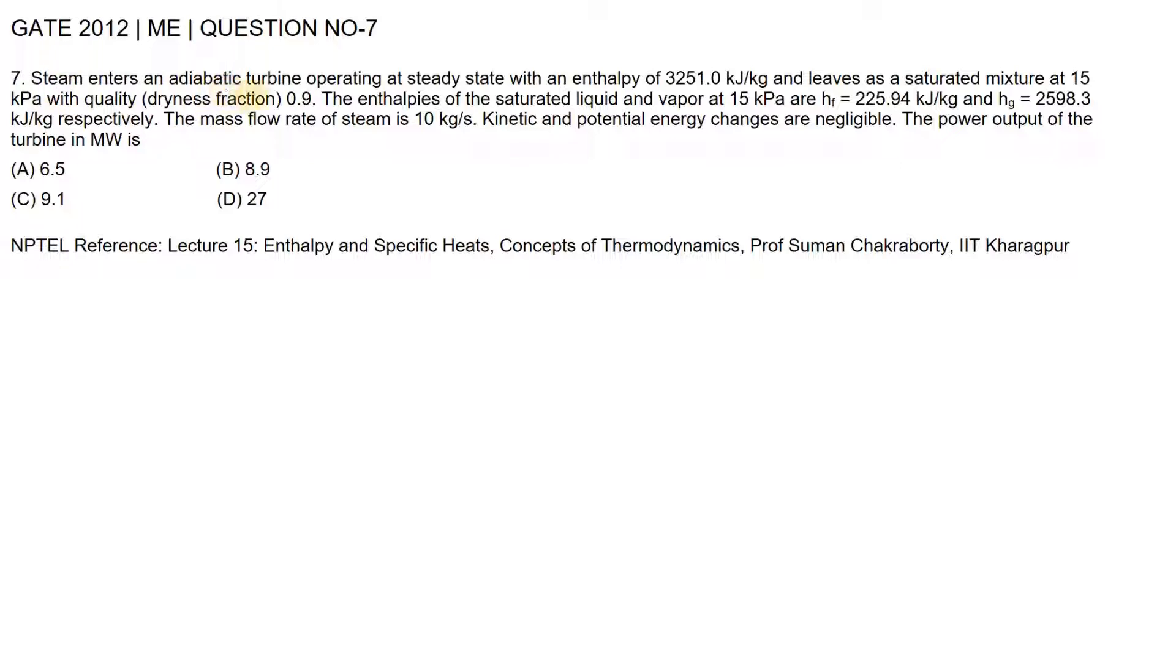The question is: Steam enters an adiabatic turbine operating at steady state with an enthalpy of 3251 kilojoules per kilogram and leaves as a saturated mixture at 15 kilopascal with quality or dryness fraction as 0.9. The enthalpies of saturated liquid and vapor at 15 kilopascal are 225.94 kilojoules per kilogram and 2598.3 kilojoules per kilogram respectively. The mass flow rate of steam is 10 kilograms per second. Kinetic and potential energy changes are negligible. The power output of the turbine in megawatts is?